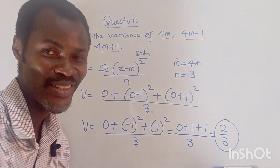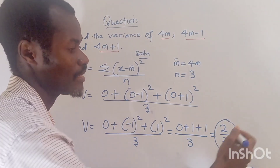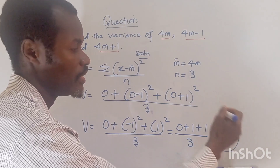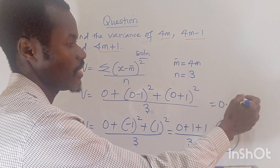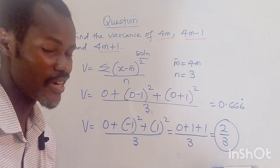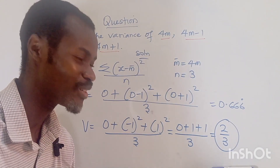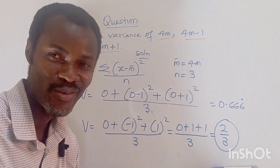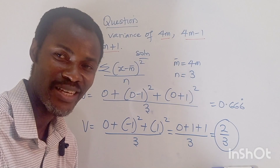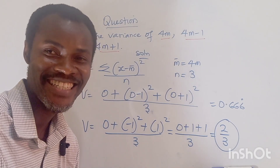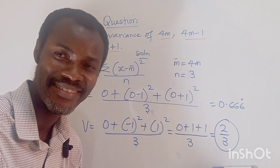So the answer is 2 over 3. If you wish, you can express it as a decimal, which is 0.1667 — a recurring decimal. Our final answer to this problem is the fraction 2 over 3. Thank you guys for watching — hit the like button, subscribe to the channel, and share the link.